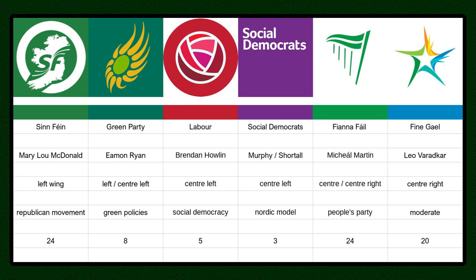Labour are a pretty standard centre-left party — Social Democrats in all but name. The unusual thing about them is how small they are: in most European countries, Labour would be the biggest or second biggest party, but in Ireland they've only ever been junior coalition partners, currently on around 5%. They've been as high as around 20% in the past. The Social Democrats are a relatively recent breakaway from Labour, a bit more moderate, talking about the Nordic model — high taxes and redistribution of wealth, but a little less nationalisation and closer to the centre than traditional social democracy.